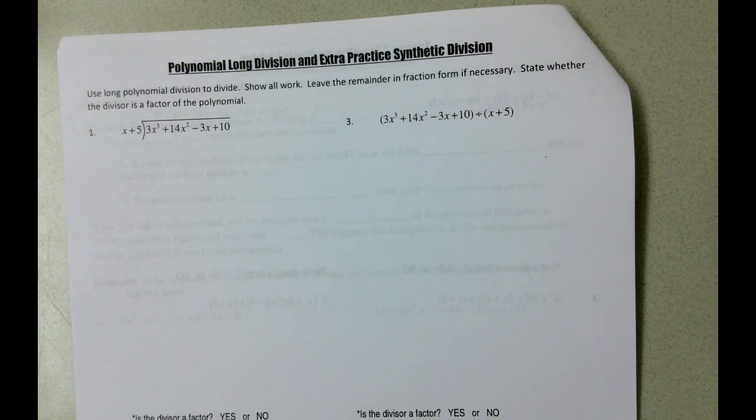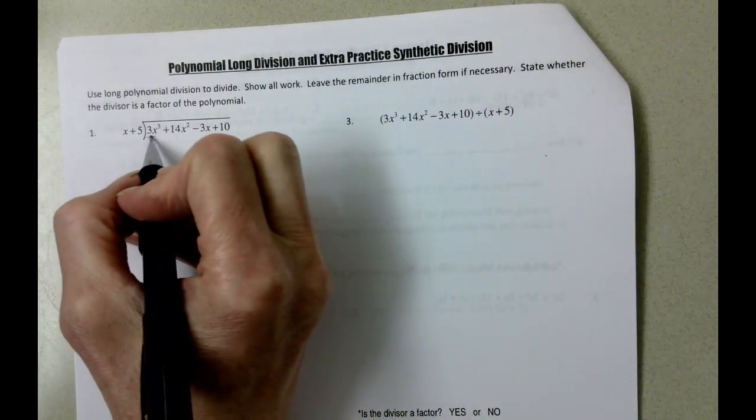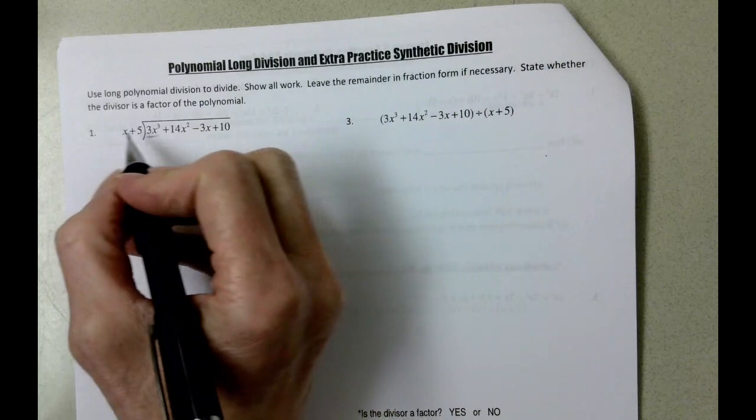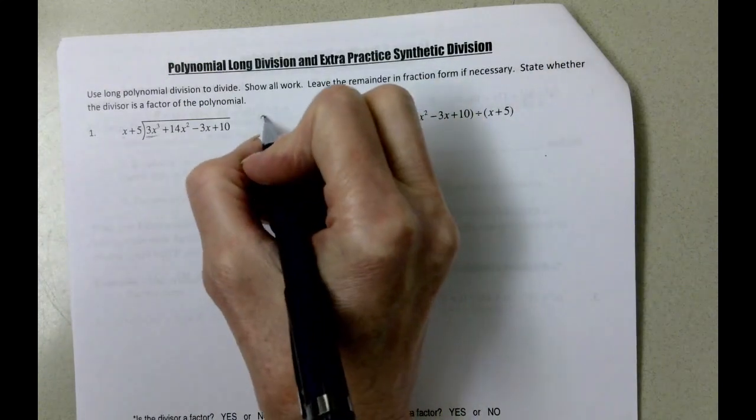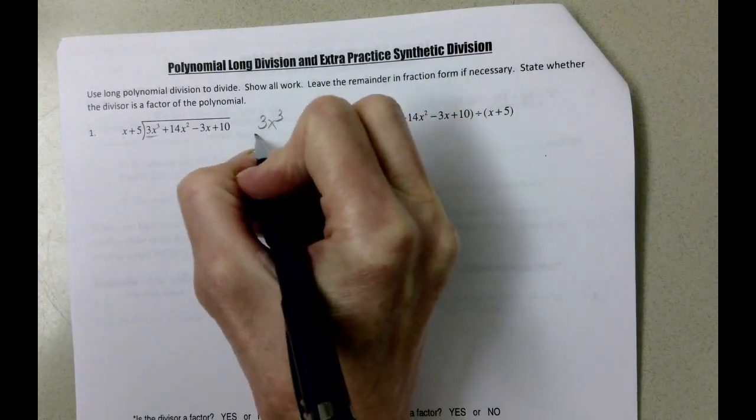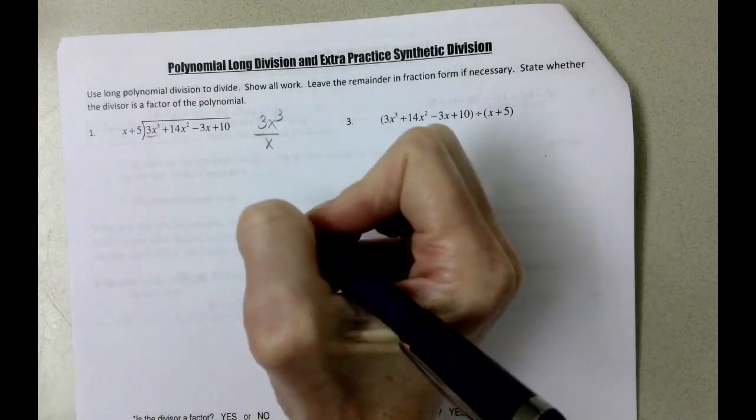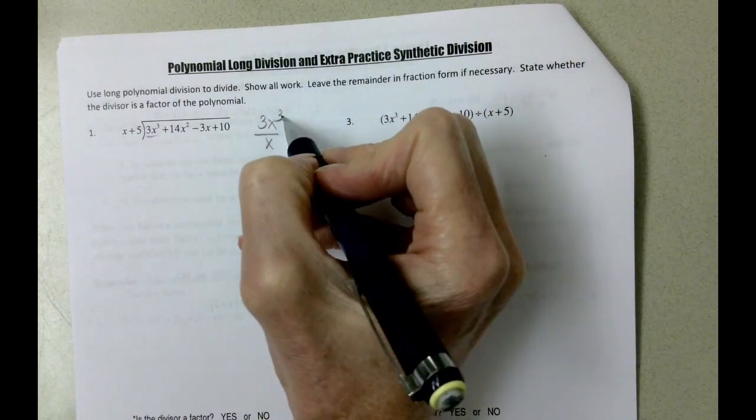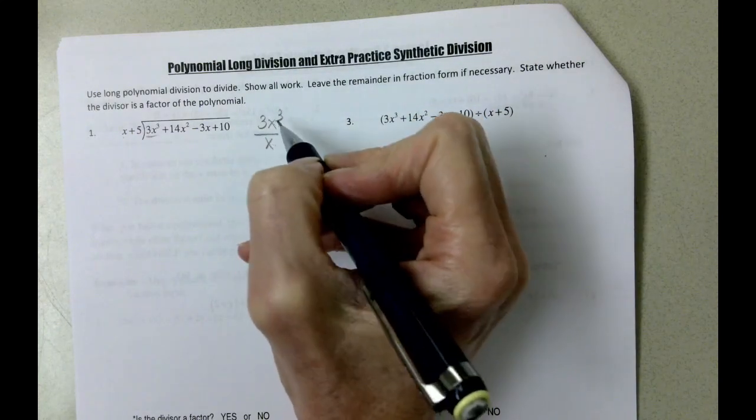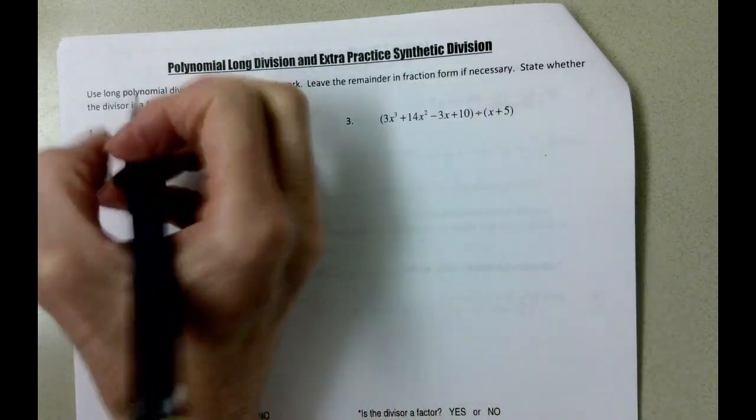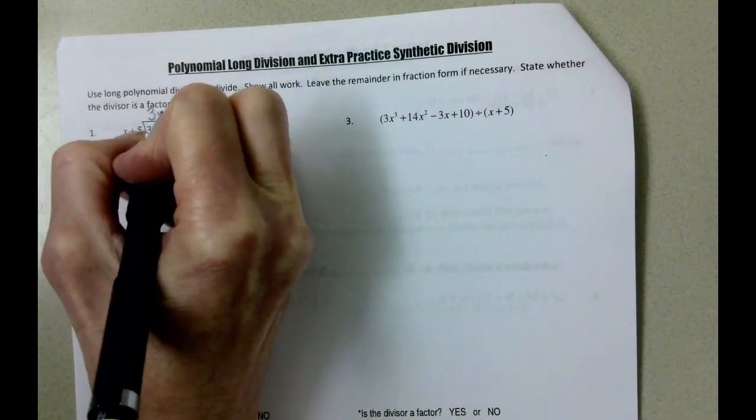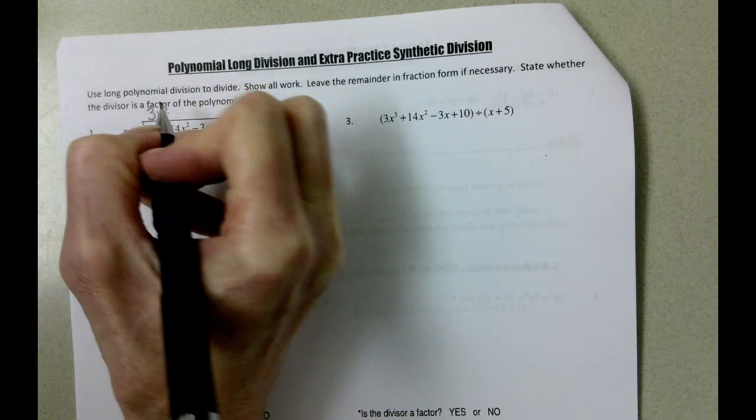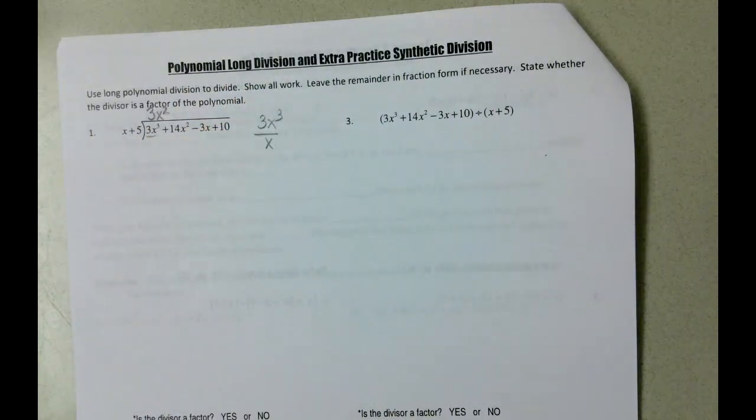So we're going to start here, and our highest degree term is 3x cubed, and we're going to divide 3x cubed by x. Well, remember we had 3x's, we took out 1. 3x cubed divided by x is really 3x squared. I'm going to write the term there, if you want to get technical it really should go over the 14x squared, but it's not a big enough deal to worry about.